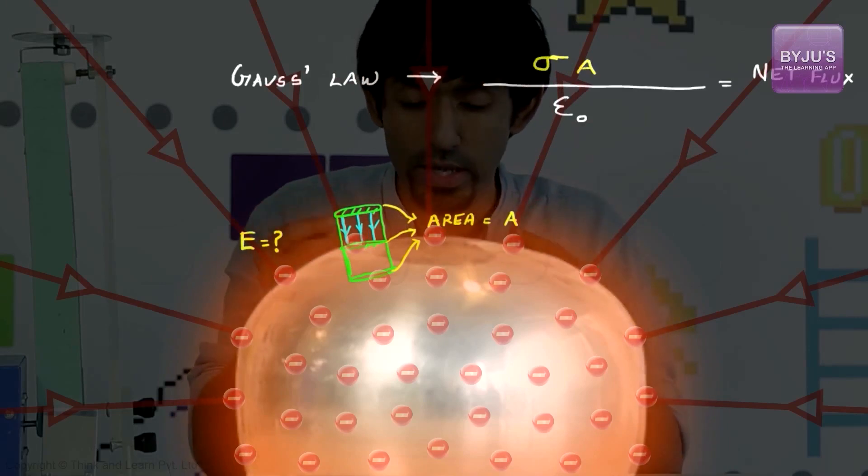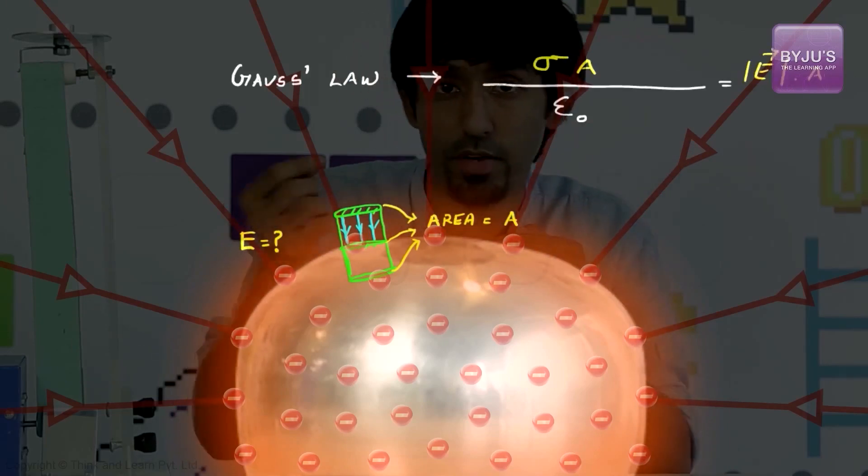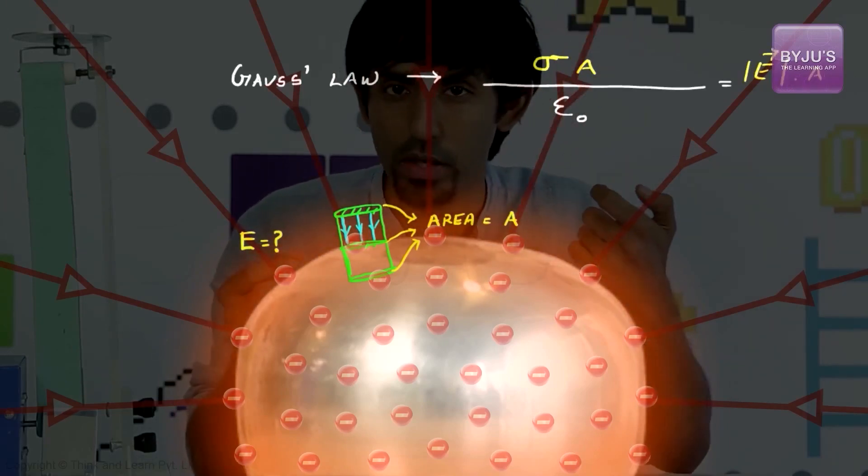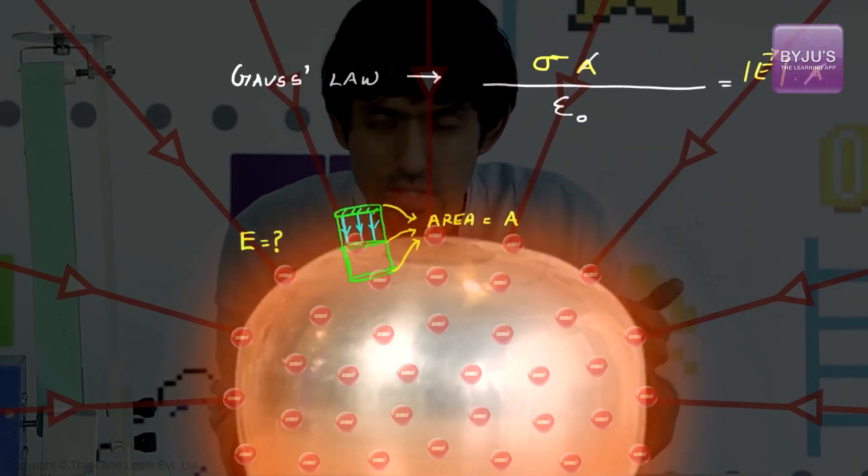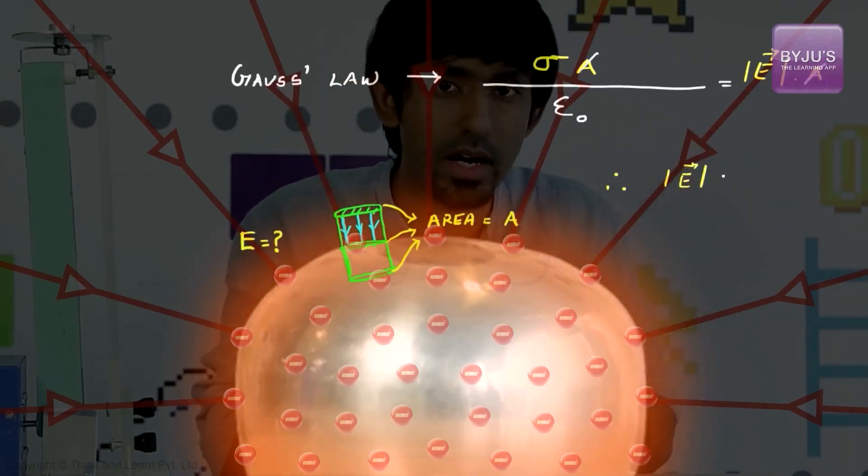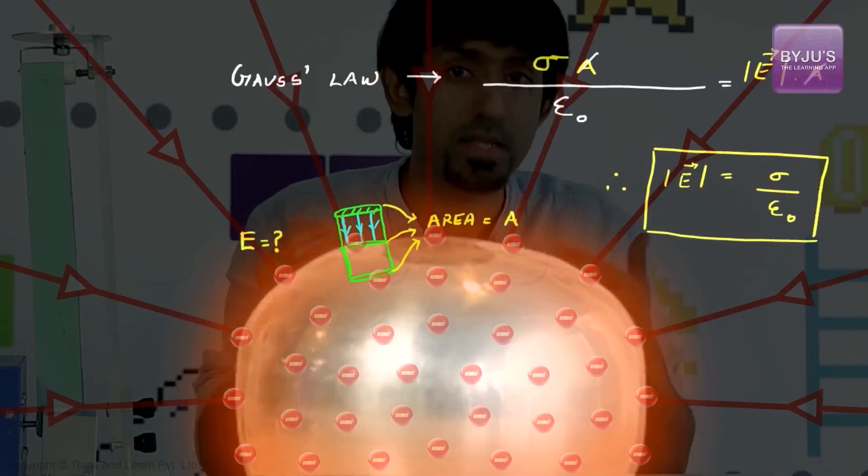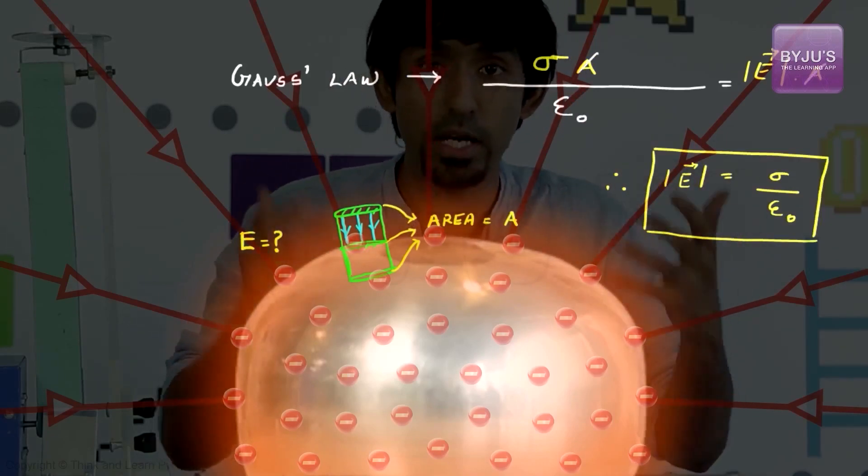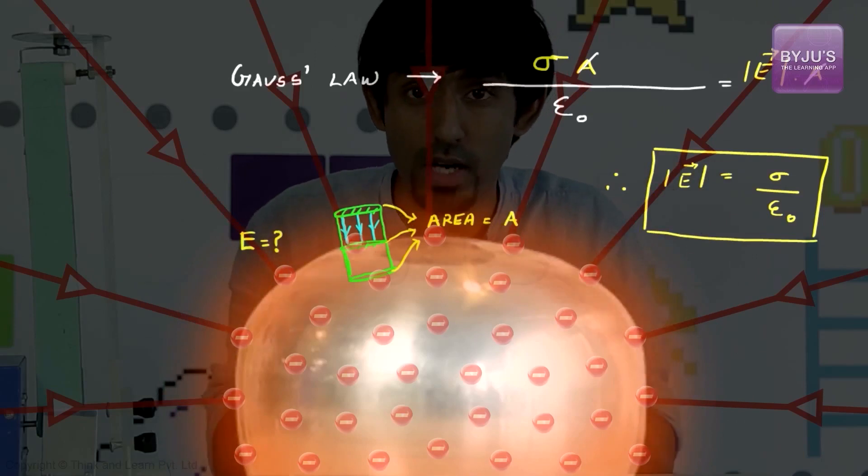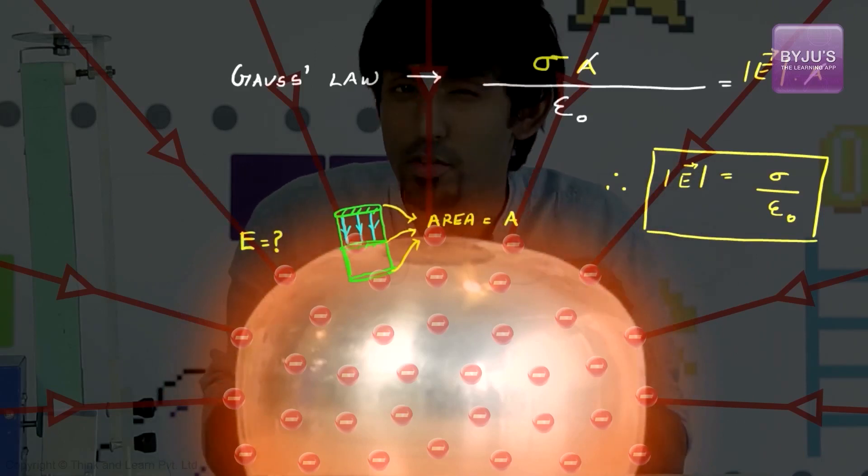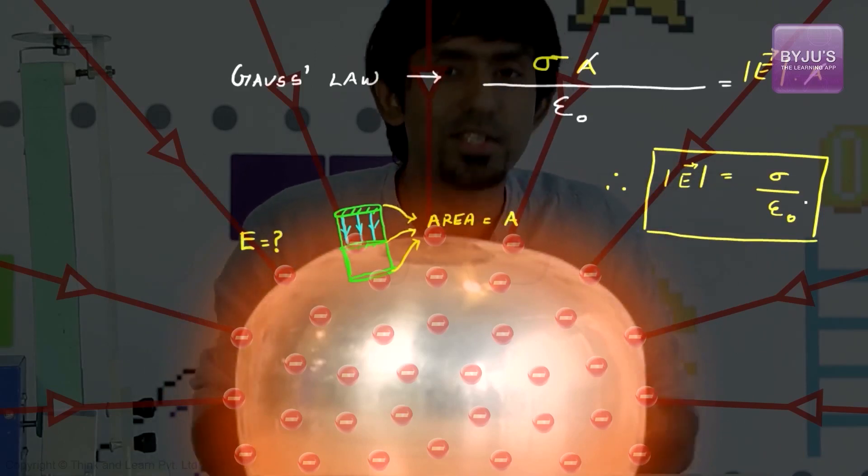And if you do that, you will get sigma into A, which is the charge enclosed, divided by epsilon naught equals E into A, because we assume E to be constant in that region. And the A's cancel, and you get the electric field in that local region to be equal to sigma by epsilon naught, clearly dependent on sigma, which is the charge density in that region, the surface charge density to be precise.